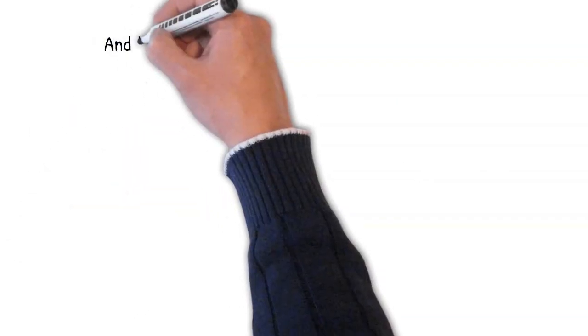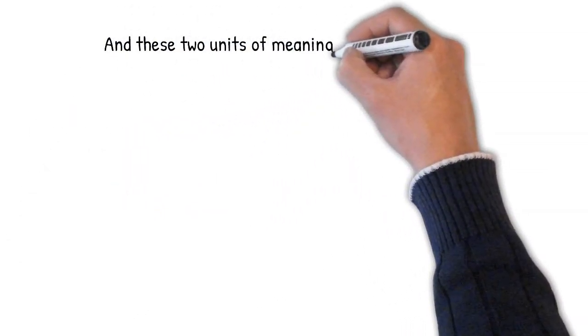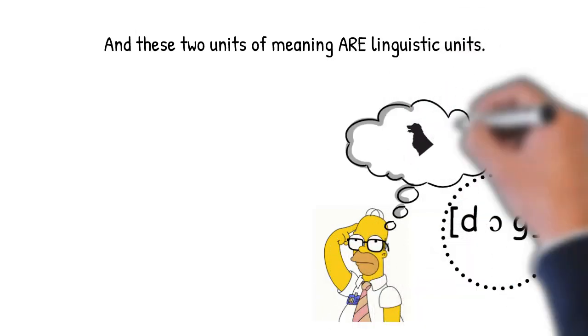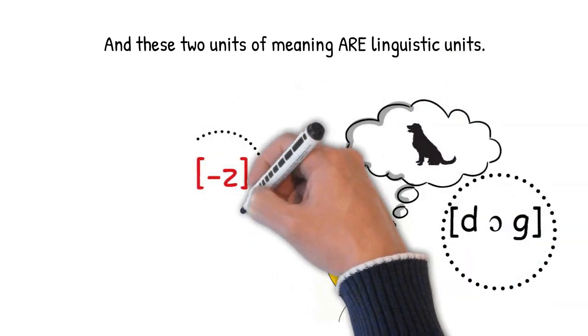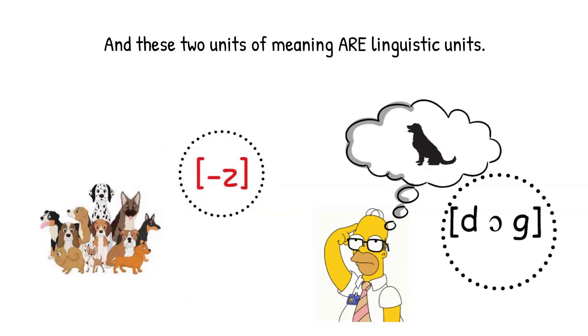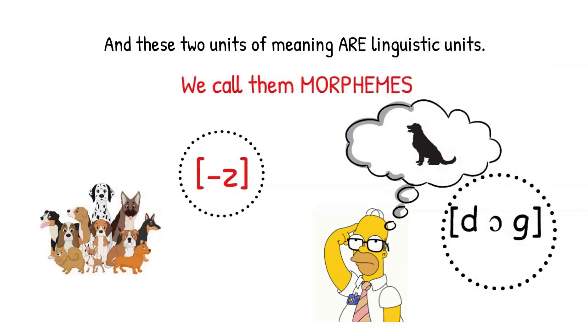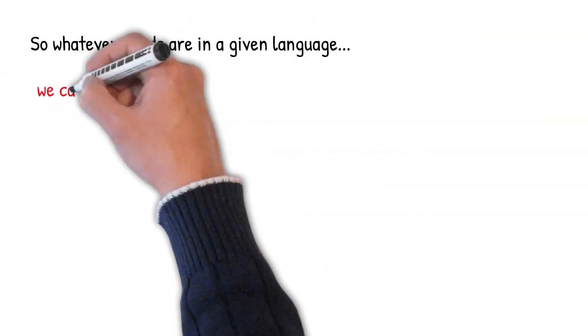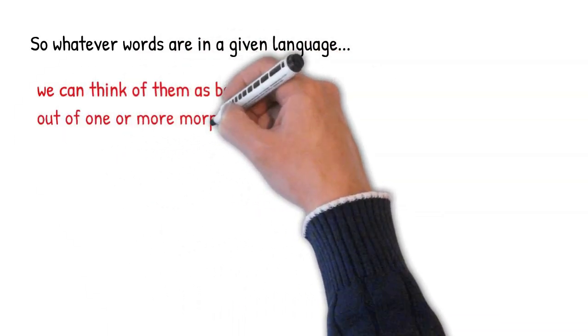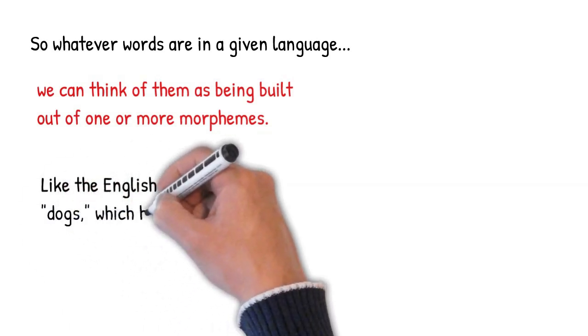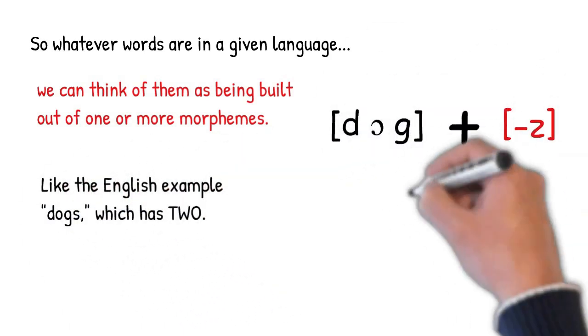And these two units, these are linguistic units. The unit that we use to refer to the concept dog and the unit that we use to refer to plurality. We call these units morphemes. So whatever words are in a given language, we can think of them as being built out of one or more morphemes. Like the English word dogs, which has two.